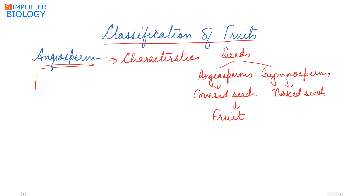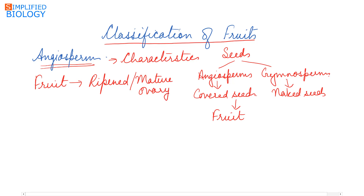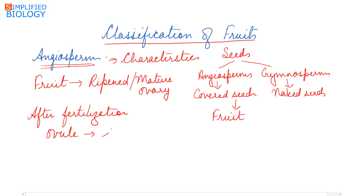A fruit is a ripened or mature ovary. After fertilization, the ovule forms the seed while the ovary forms the fruit. So fruits are formed after fertilization.